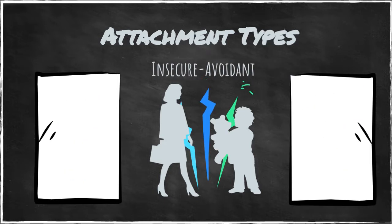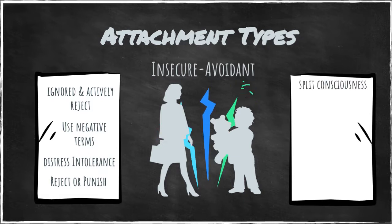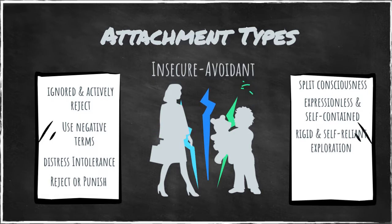Babies with an insecure avoidant attachment are frequently ignored and actively rejected by their mothers. Mothers speak of their babies in negative terms, and they are intolerant of their baby's distress. They often reject or punish the infant for being distressed. Babies with avoidant attachment develop a split of consciousness as a defense, and often appear expressionless or self-contained. They pursue action and exploration in a rigid and self-reliant way, and display higher levels of hostility and negative interactions with others.